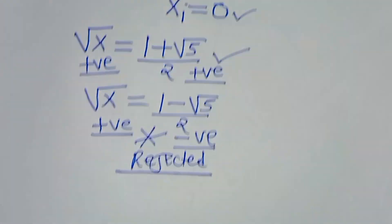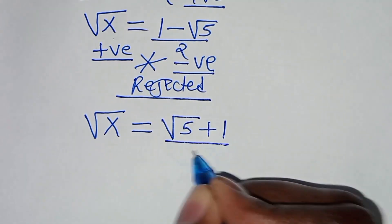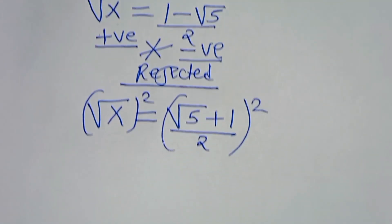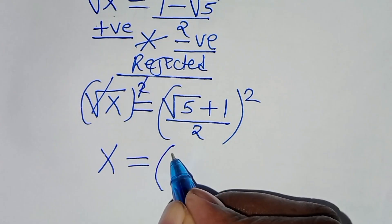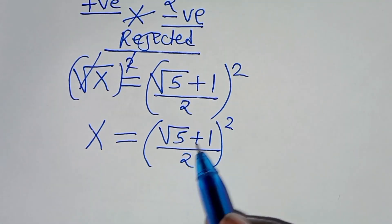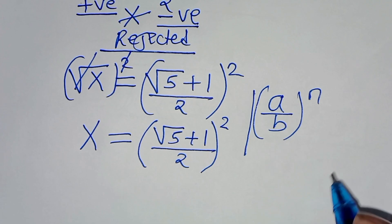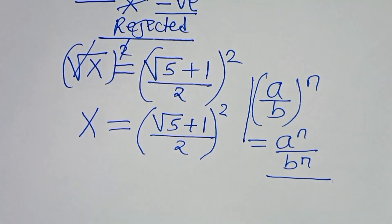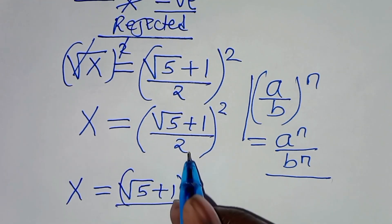So let's proceed with square root of x equals (square root of 5 plus 1) over 2. To solve for x, let's square both sides so that the square root is eliminated, giving x equals (square root of 5 plus 1) over 2, squared. Applying the exponent property (a/b)ⁿ = aⁿ/bⁿ, we get x equals (square root of 5 plus 1) squared, divided by 2 squared.